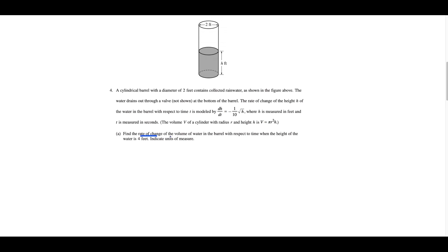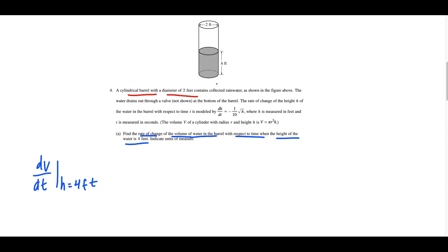For part A we want to find the rate of change of the volume of water in the barrel with respect to time when the height of the water is 4 feet. That entire first sentence tells us we're looking for dV/dt when h equals 4 feet. This is a cylindrical barrel with a diameter of 2 feet — water is being drained, but the radius is not changing at any point. So r is constant, which will make the derivative step much easier.